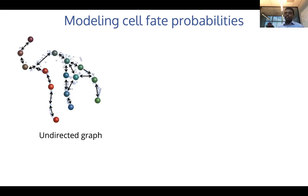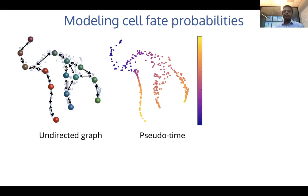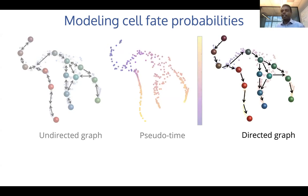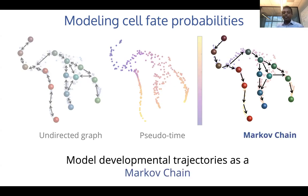This pseudotime is effectively just a one-dimensional representation of progression and doesn't inform about lineage decisions. We started with the nearest neighbor graph, which by definition is undirected because connecting cells to nearest neighbors doesn't implicitly encode directionality. But we do have access to the pseudotime order, so we can reorient our undirected graph to be consistent with the pseudotime order, deriving a directed graph representing the differentiation system. Once we have the directed graph, we can convert distances to affinities, normalize them, and model the differentiation process itself as a Markov chain.